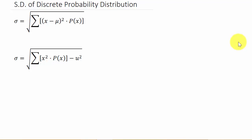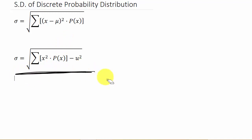In this video we're going to look at finding the standard deviation of a discrete probability distribution. Here's the formula — you can see there are two different formulas; they will both give you the same result. It's just a preference which one you want to use, or which one your teacher makes you use. We'll calculate it using both.